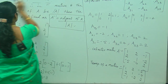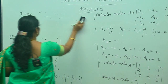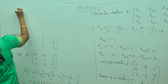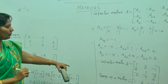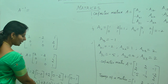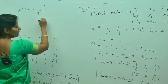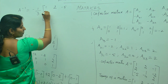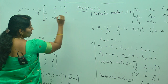Finally, A inverse equals adjoint of A by determinant of A. We have found the adjoint of A, and the determinant of A is minus 3. Therefore, the final answer is minus 1 by 3 times the matrix: 1, 2, minus 5; 2, 1, minus 4; minus 1, minus 2, 2. This is the inverse of the matrix.